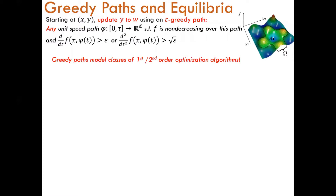The key idea in our framework is to restrict the max player to making updates which follow a type of path which we call greedy paths. These greedy paths model a large class of second-order optimization algorithms. Formally, we say that a unit speed trajectory for the y variable is a greedy path if the value of f is non-decreasing over this path, and either the first derivative of f when traveling over this path is at least epsilon, or the second derivative of f is at least root epsilon. It turns out that any greedy path can be extended until it reaches an Epsilon-Local maximum of f.